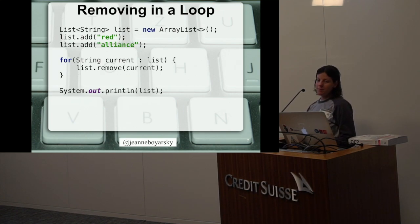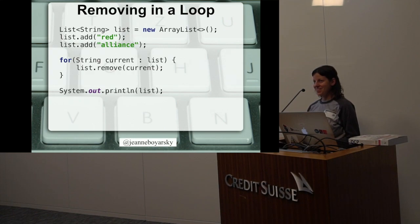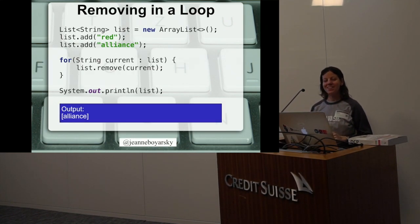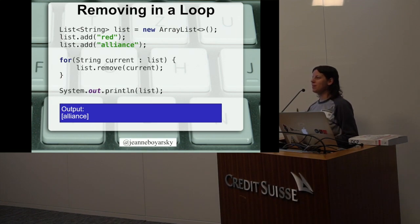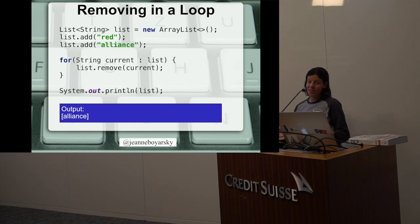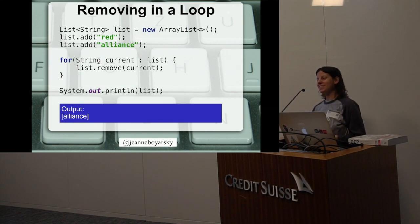What about this code? What do we think happens here? I'm hearing the same thing. And that's why this talk exists, because it does not do the same thing. It outputs a lines — it's probably not what you wanted to happen. You were probably hoping you would get a concurrent modification exception again, so at least you knew something was wrong, or that it would delete both red and alliance from the list, and you would have an empty list. Unfortunately, that is not what happens.